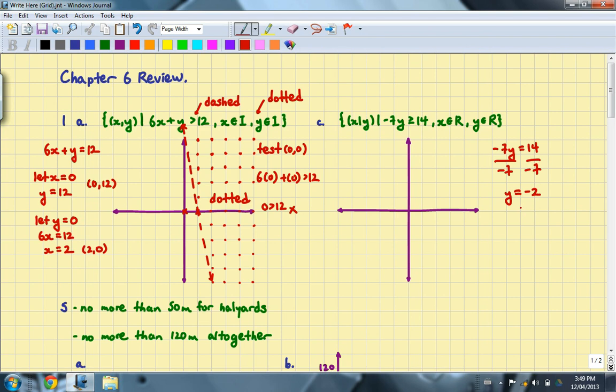So this is actually just going to be a horizontal line, y equals negative 2. So I'm going to go ahead and draw that in. This time, I do want a solid line because it is greater than or equal to. And once again, I'm going to test the point 0, 0 because the line does not go through 0, 0, which is convenient.